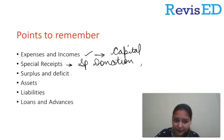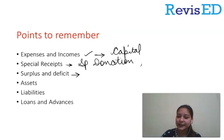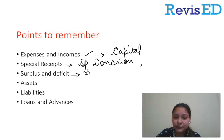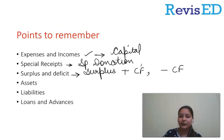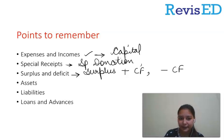Next: surplus and deficit. We have to transfer surplus or deficit from the income and expenditure account. If there is a surplus, we will add it to the capital fund. If there is a deficit, we will subtract it from the capital fund. Capital fund is written on the liability side.